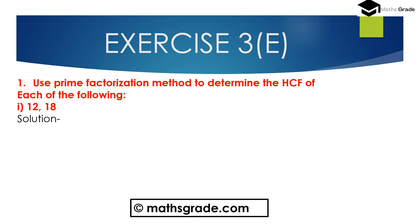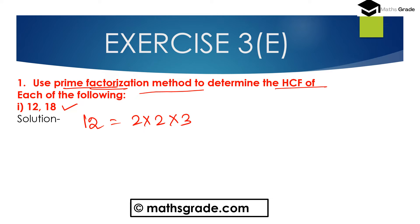Now we will solve question number 1. Use the Prime Factorization Method to determine the Highest Common Factor, that is HCF, of 12 and 18. First we find out the prime factorization of 12 and 18. 12 is 2 multiplied by 2 multiplied by 3. 2 multiplied by 2 is 4, and 4 multiplied by 3 is 12. This is the prime factorization of 12.